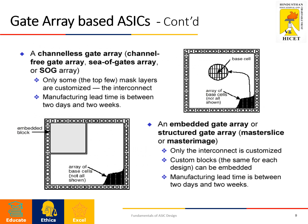The second classification is channelless gate array — there are no channel rows, only vertical lines, and all channels are customized. It is also called sea-of-gates (SOG), and only some mask layers (the interconnect layers) are customized. Manufacturing lead time is the same: two days to two weeks. The last type is embedded gate array, which contains an array of base cells (a master slice or master image) where only the interconnect is customized and custom blocks can be embedded. Manufacturing lead time is again two days to two weeks.